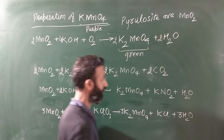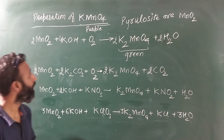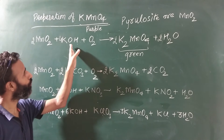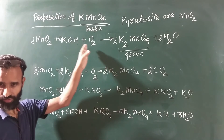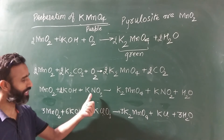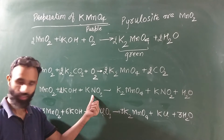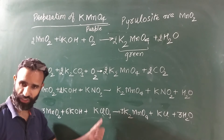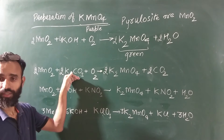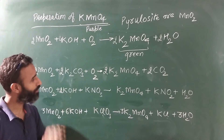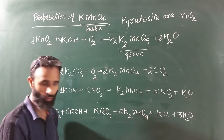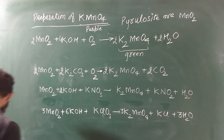So this is the first method: you have pyrolusite ore powder, you pass KOH and O2, or KOH and KNO3 and KClO3 as oxidizing agents. Instead of KOH you can use potassium carbonate, then you pass oxygen as well. We get K2MnO4 in this first step.